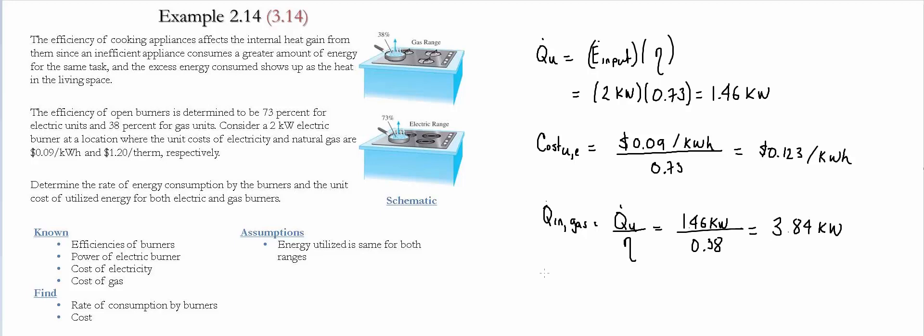Now by knowing the conversion that one therm is equal to 29.3 kWh, we're able to also estimate the cost of the utilized energy for the gas. So in this case, we're going to have the value is $1.20 per therm.